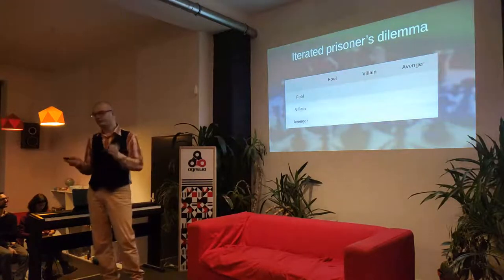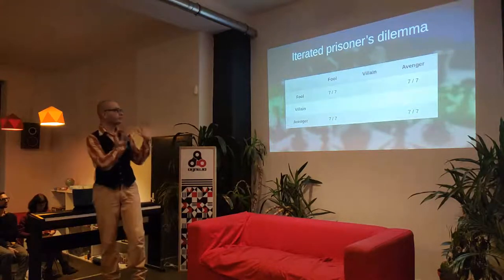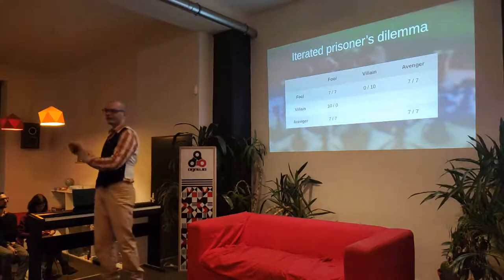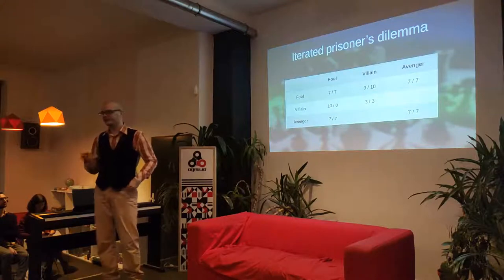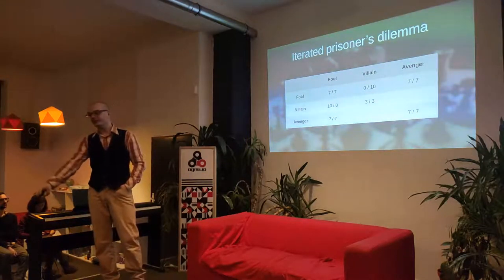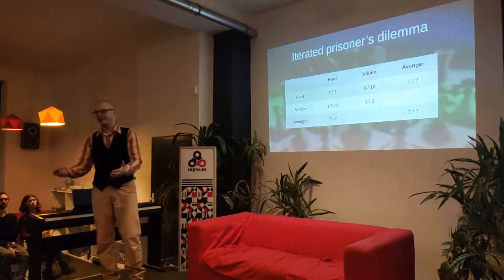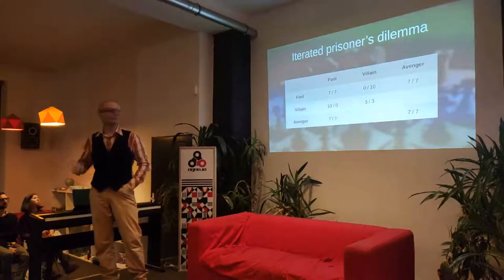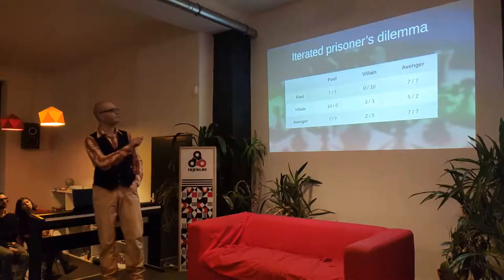How do these strategies play against each other? Avenger and Fool: neither betrays first, so they continuously cooperate and receive a payoff of 7-7. Villain against Fool: villain betrays fool, who allows himself to be exploited — payoff is 10 to 0. Villain against Villain: they constantly betray each other — payoff is 3-3. In the interesting match of Avenger against Villain: on the first iteration, villain betrays Avenger while Avenger cooperates, so Avenger is exploited. But in every next iteration, Avenger avenges and villain remains villainous — so they betray each other. On average the payoff is close to 3-3, but because of that first round the villain gets slightly more — say four for villain and two for Avenger.